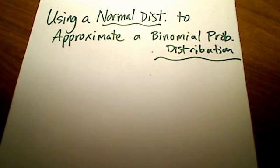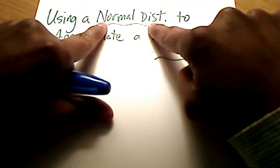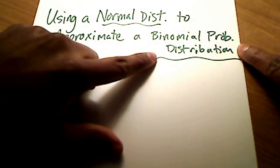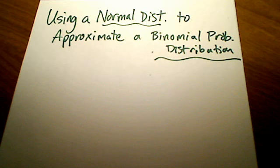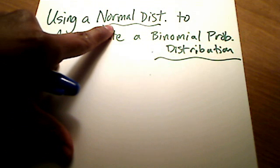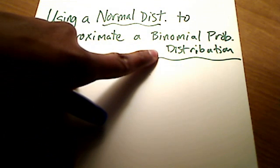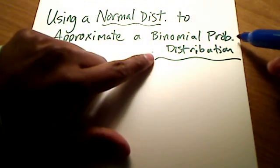This is kind of strange because I've got two things going on here. A normal distribution is really dealing with continuous data — anything that can be measured. Whereas a binomial probability distribution is mostly discrete data, almost entirely discrete. So I'm going to try to use a normal distribution to approximate — it's not going to be exact, but it's going to be pretty close — a binomial probability distribution, which is discrete data.